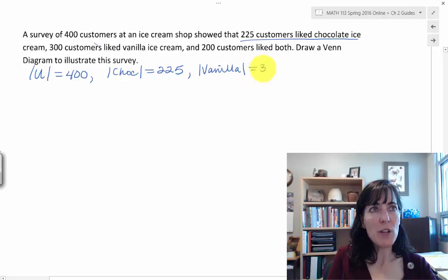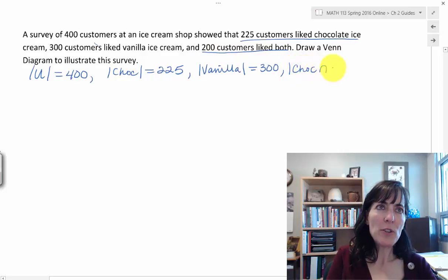And finally, 200 customers liked both. So the cardinal number for chocolate intersect vanilla is 200.